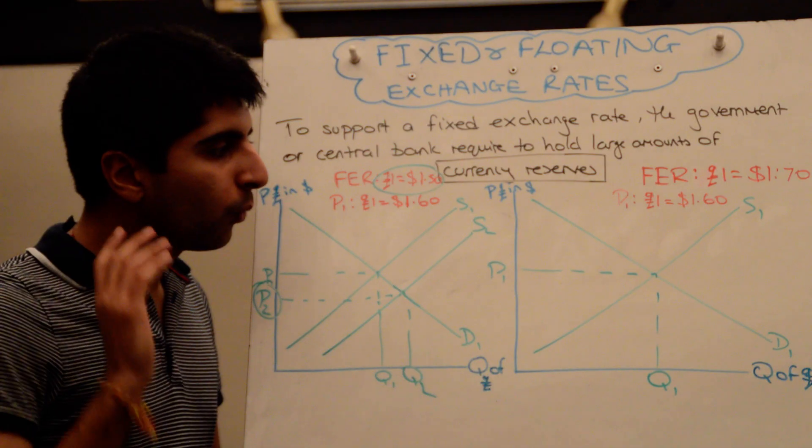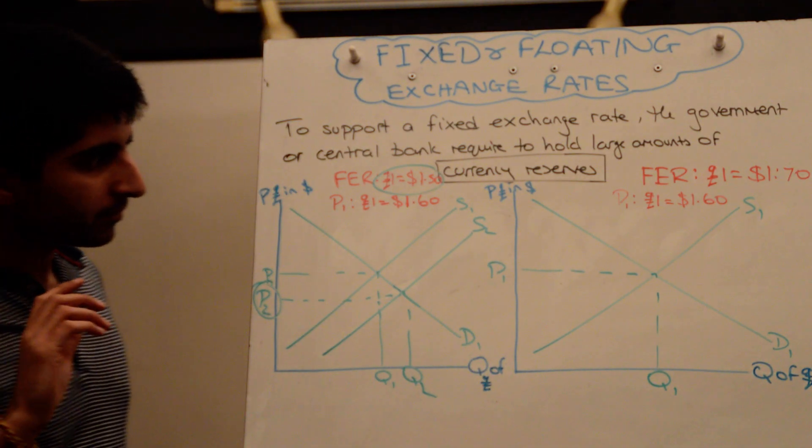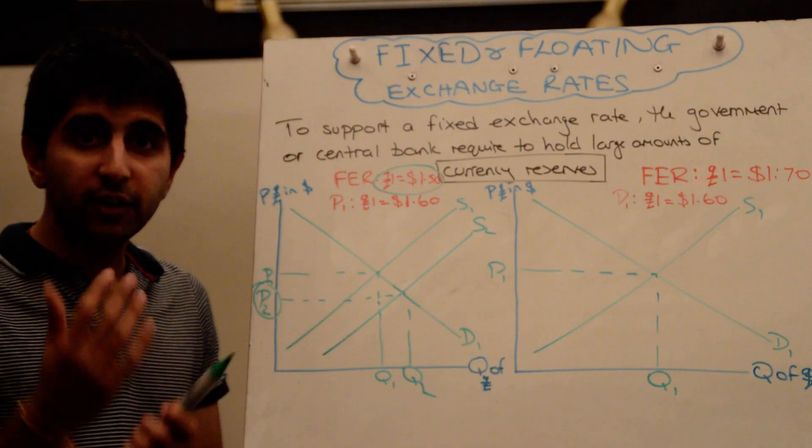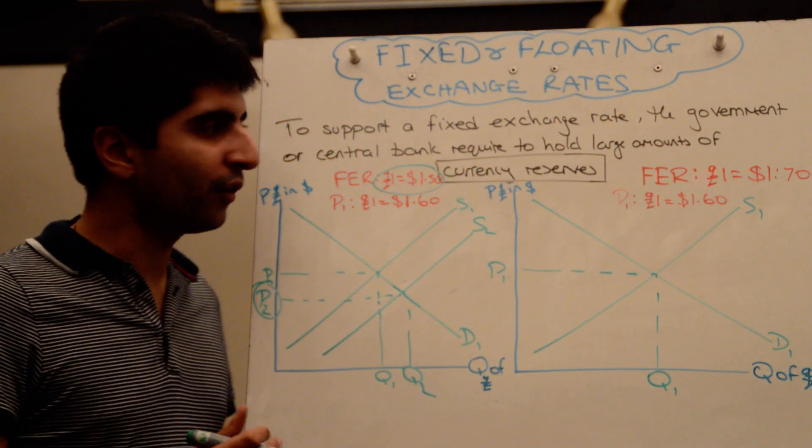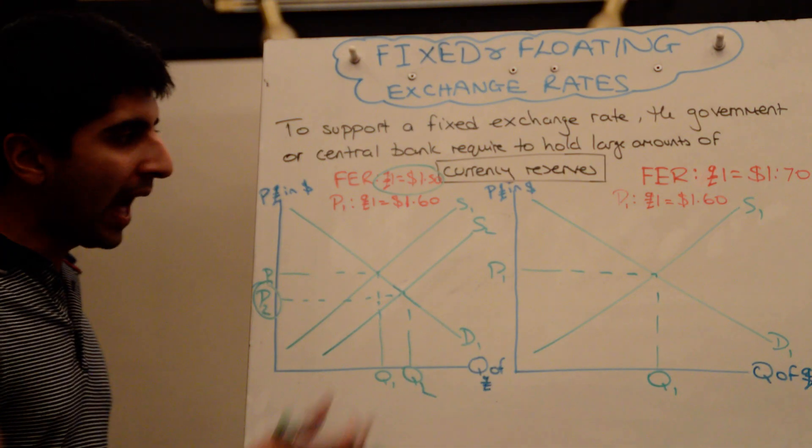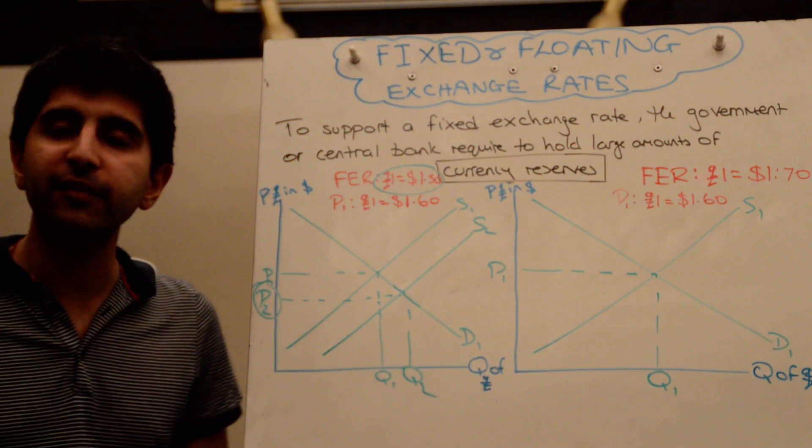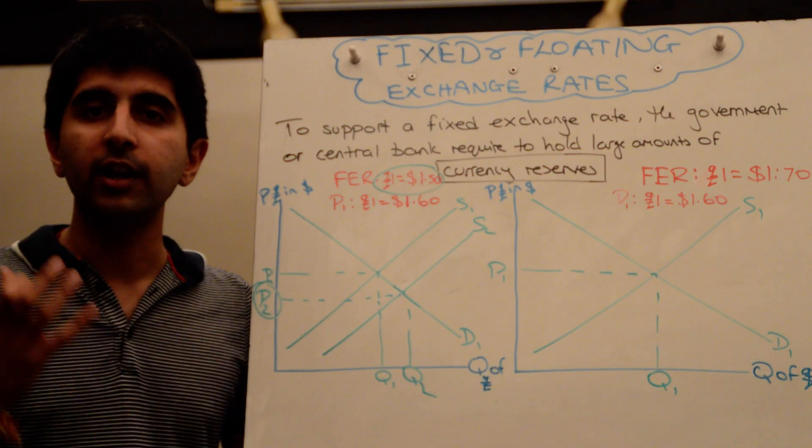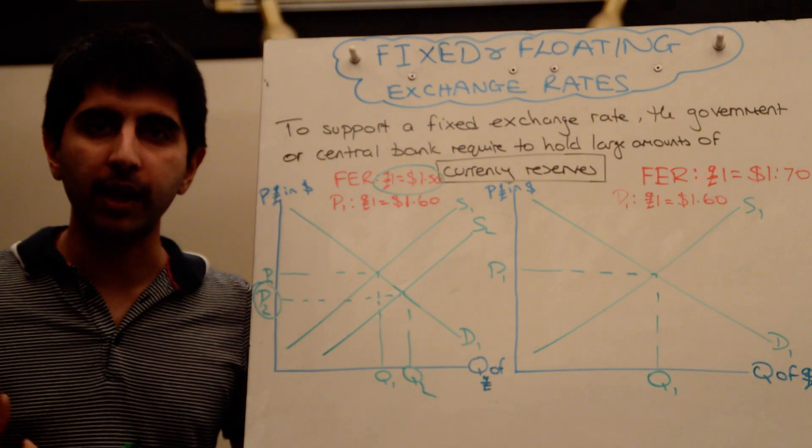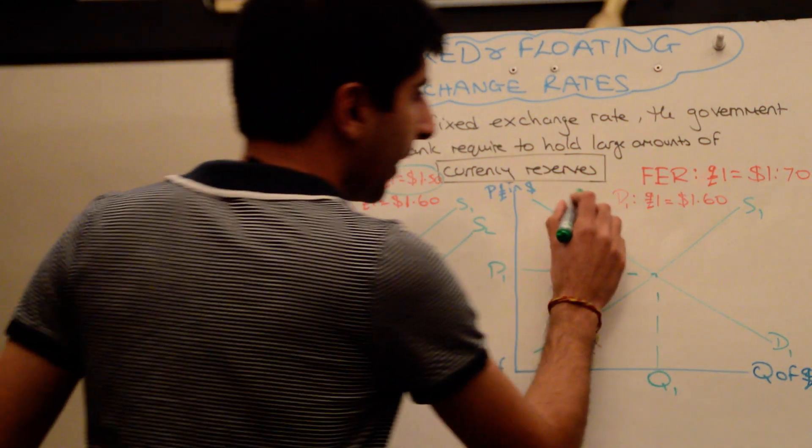Well, what actually needs to happen in this market to push up the value of the exchange rate? Well, the governments need to get involved, or the authorities need to get involved, and increase demand for the currency, demand for the pound. How can they do that? Well, very simply, they can use their foreign currency reserves to buy up more of the pound in the market. That will increase demand for the pound, shifting demand to the right.